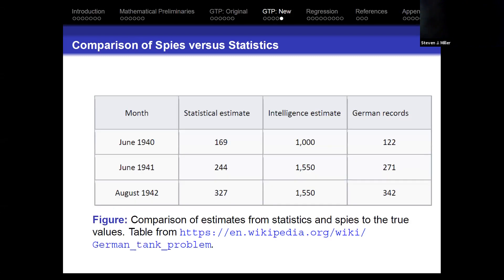This is one of my favorite tables I've ever seen. Here are three different months: the first column is the statistical estimate of how many tanks were being produced, the next is the intelligence estimate, and the last is the actual number from German records after the war. You can see how well the mathematician-statisticians did — they're essentially within 10%. The intelligence estimates are completely off. It shows you that to have an impact in the world you don't need the most advanced mathematics. This is mathematics we were able to do in an hour, using essentially basic properties of Pascal's triangle.